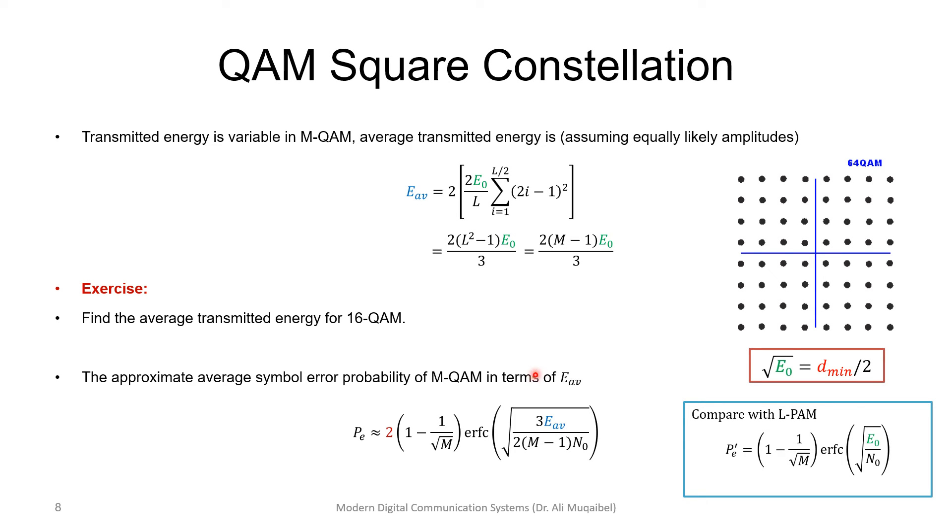Remember that in PAM, the minimum distance is one important characteristic of the constellation. But here, we have to relate things to the average energy per symbol. We're not showing the derivation, but you can see the similarity between PAM and QAM.